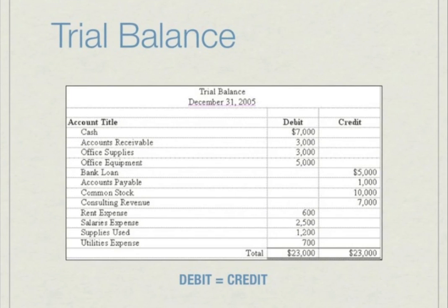On this slide we have a trial balance. The trial balance is completed after a ledger is made and contains all of the individual accounts from the ledger — the same T-accounts from the first slide. We can see the balance of each account and whether it has a debit or credit balance. One of the main goals of the trial balance is to ensure no mistakes have been made in the accounting process; at the end, total debits should equal total credits.